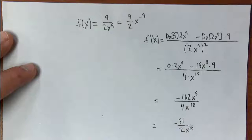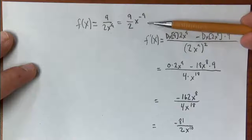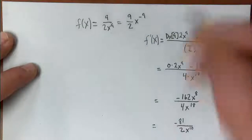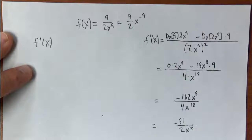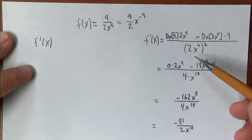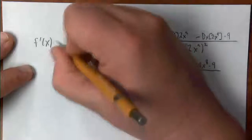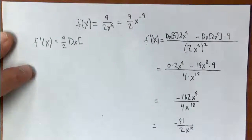Now let's show how you get the exact same solution if instead you treat the function as just a coefficient times a power function. We would use the power rule, rewriting f as 9 halves times x to the negative 9th, and factor out that 9 halves, then take the derivative of x to the negative 9th power.